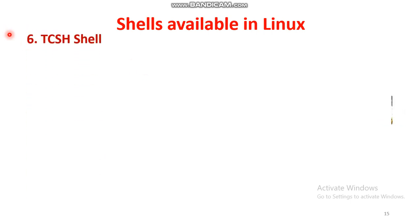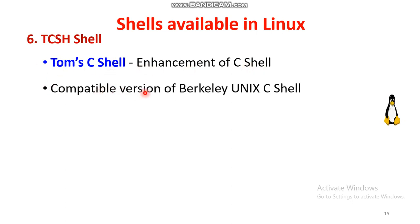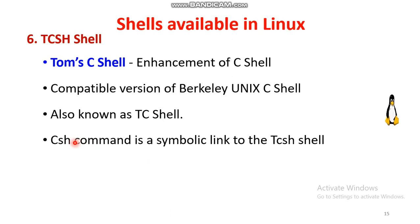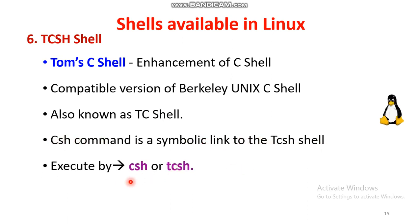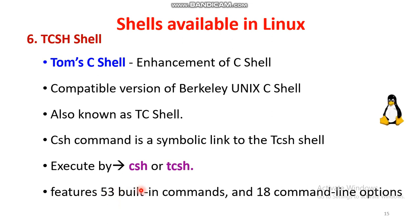The sixth type is the TCSH shell, also called Tom's C shell. It is an enhancement of the C shell and a compatible version of the Berkeley Unix shell, also known as TC shell. It has 53 built-in commands and 18 command line options.